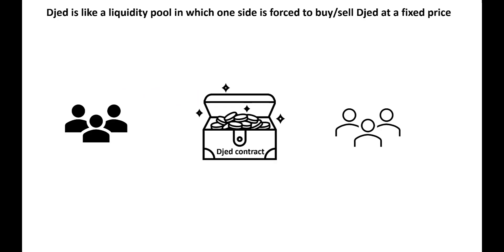Those of you who have used DEXs will be familiar with the concept of a liquidity pool. I'm going to make a bold claim that Djed is just like a liquidity pool in which one side — the left hand side of this diagram — is forced to buy and sell Djed at a fixed price. We have two parties: on the left are investors looking to fund the Djed contract, acting as liquidity providers, and on the right are ordinary people who want to swap their ADA and get a Djed stablecoin in return.